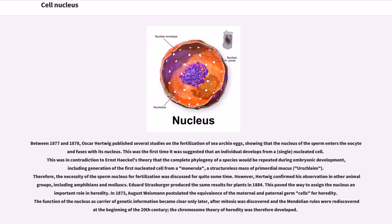Between 1877 and 1878, Oscar Hertwig published several studies on the fertilization of sea urchin eggs, showing that the nucleus of the sperm enters the oocyte and fuses with its nucleus. This was the first time it was suggested that an individual develops from a single nucleated cell. This was in contradiction to Ernst Haeckel's theory that the complete phylogeny of a species would be repeated during embryonic development, including generation of the first nucleated cell from a monerula, a structureless mass of primordial mucus, Urschleim.